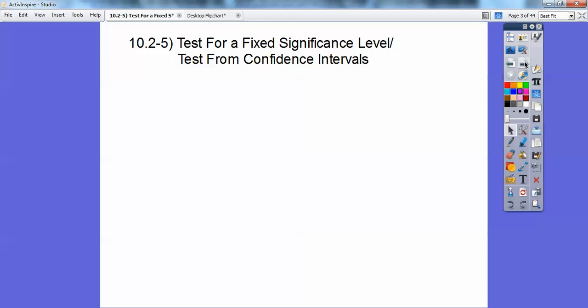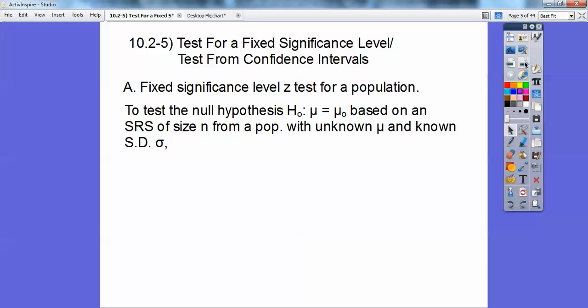So test for a fixed significance level and test from confidence intervals, section A, a fixed significance level Z test for a population. So to test the null hypothesis, whether the population μ, that's what this is right here, the population mean is equal to the sample mean, based on an SRS of size n from a population with unknown population μ and known standard deviation σ.